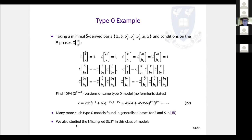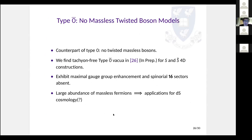Finally, a note about type 0-bar models — the counterpart where there are no twisted massless bosons. In both S and S-tilde constructions, we can find such models which are tachyon-free. They also seem to necessarily gain maximal gauge group enhancements, and the spinorial 16 sectors seem to be absent in all cases. Because of the large abundance of massless fermions, we expect a positive cosmological constant, which might have interesting applications to de Sitter cosmology.